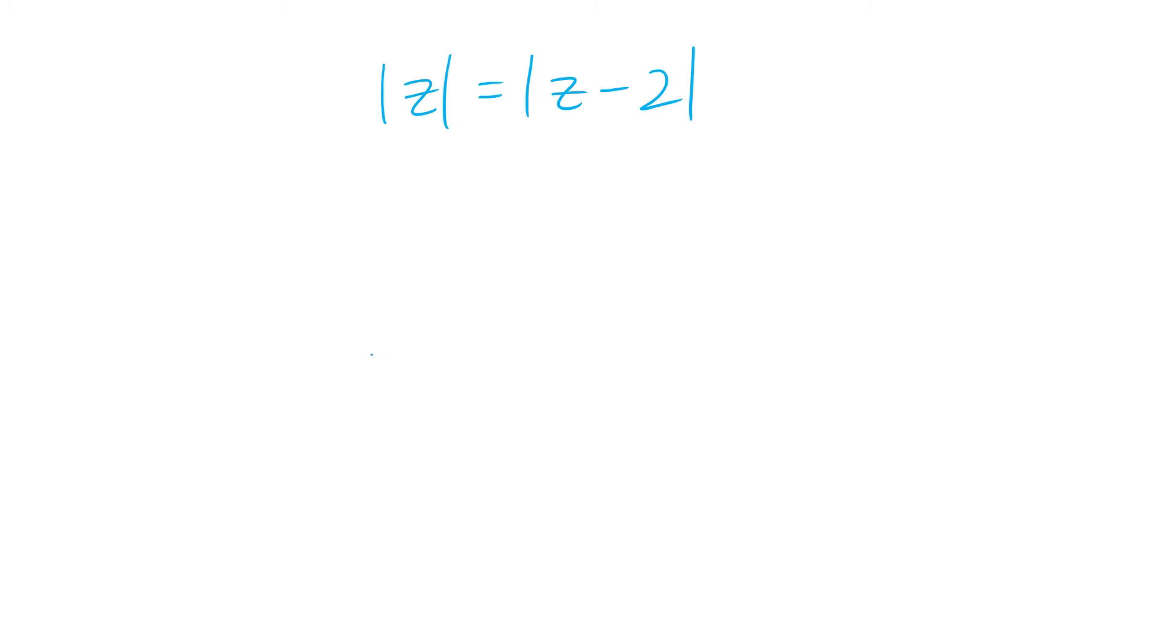On the other hand something a little bit more complicated like this is basically saying find every possible z where its distance to the origin is equal to the point's distance from the point 2.